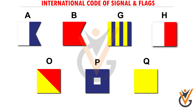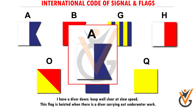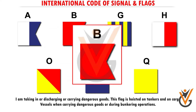Flags A, B, H, G, O, P, and Q are commonly used by mariners while approaching or departing a port, and in port, to communicate to other vessels in the vicinity and/or port personnel. Meaning of commonly used flags: Flag A — I have a diver down, keep well clear at slow speed. This flag is hoisted when there is a diver carrying out underwater work. Flag B — I am taking in, discharging, or carrying dangerous goods. This flag is hoisted on tankers and on cargo vessels when carrying dangerous goods or during bunkering operations.